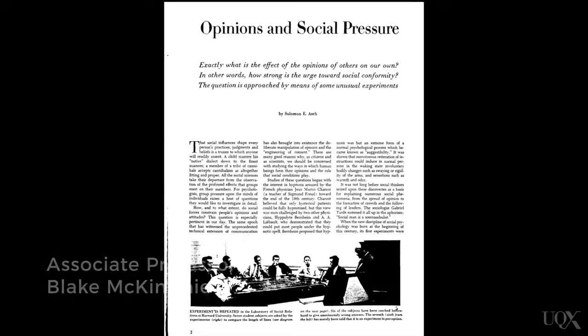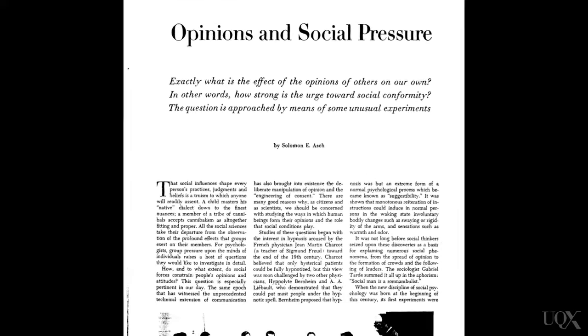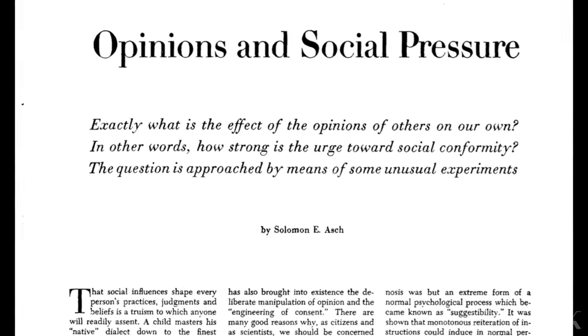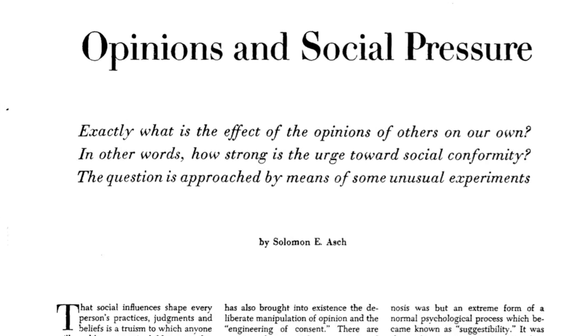Conformity happens when people give in to real or imagined social pressure. Asch's 1955 study is probably the most well-known study looking at conformity. In that study, between seven and nine students were seated around a table in a classroom. They had been told that the study was about perception.